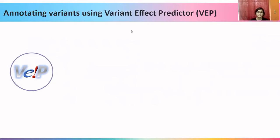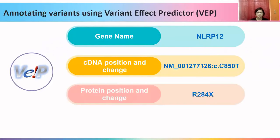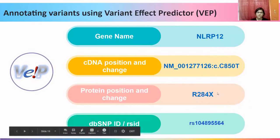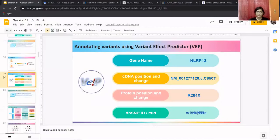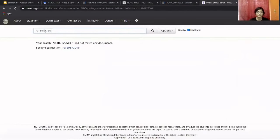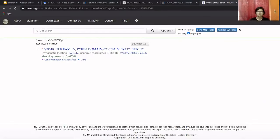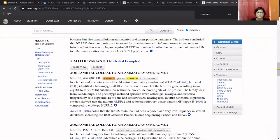For another example of PS3, I will use a different variant from the previous assignment. After annotating with VEP, the gene name was found to be NLRP12, with specific cDNA and protein changes and an RSID. In the interest of time, I will demonstrate searching only with the RSID on OMIM. After searching, I have directly reached the part of the page where this particular variant is present.